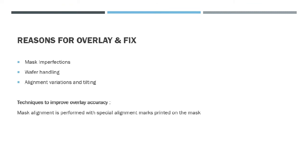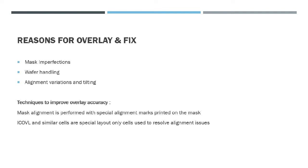Techniques to improve overlay accuracy include mask alignment performed with special alignment marks printed on the mask. For example, ICOVL — in-chip overlay cells — or similar cells are special layout cells used to resolve alignment issues. These are especially used for larger chips or SOCs. The alignment deviation should not exceed the maximum overlay value specified for the particular process node.